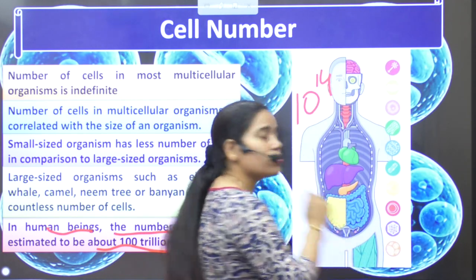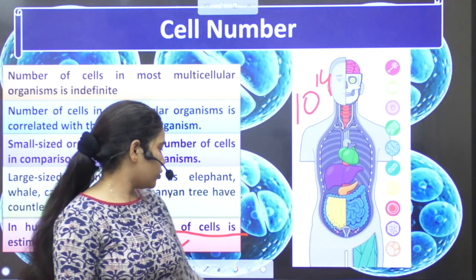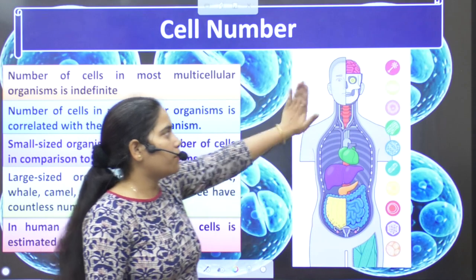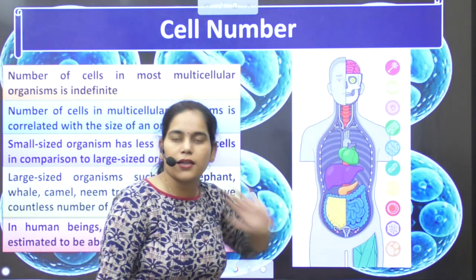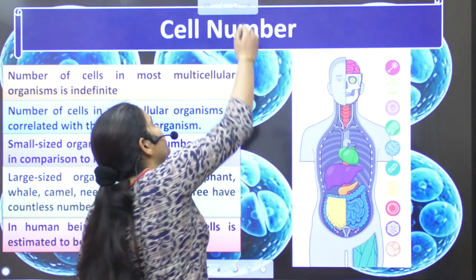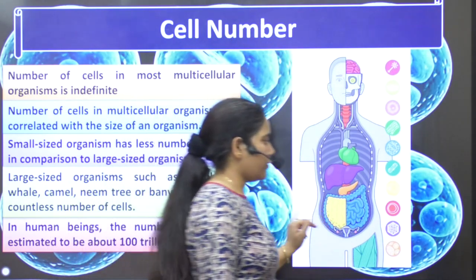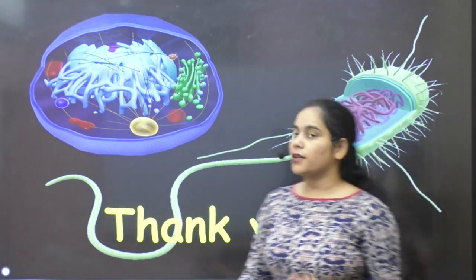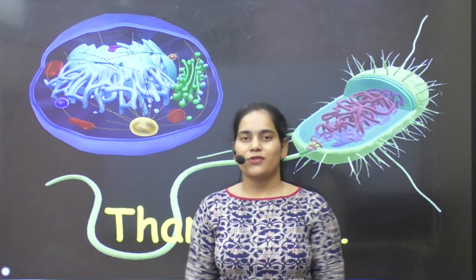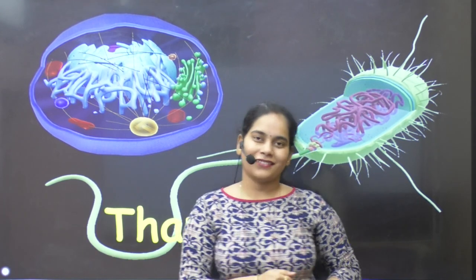Now think about how many cells are in the human body. There are different types of cells in the body, which you have learned about before. So now you can understand about cell number and volume. That's enough for today's class. We'll see you in the next video. Take care. Goodbye.